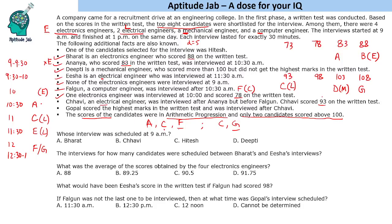Now mapping the remaining candidates: the names B, D, and H are still unassigned. Hitesh is one of those remaining. Deepthi is a mechanical engineer scoring above 100, and Bharat is an electronics engineer scoring 88. The 10 AM electronics engineer scored 78, so that cannot be Bharat.